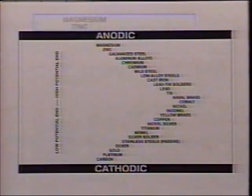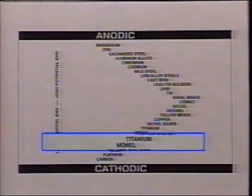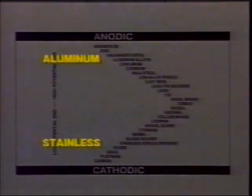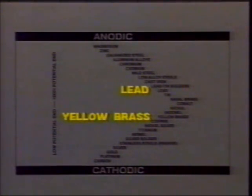At the top of the chart are the metals which most easily corrode, such as magnesium and zinc. At the bottom are the metals which are least likely to corrode, such as gold and platinum. Aluminum appears higher on the chart than stainless steel, which means that the aluminum will act as the anode and the stainless steel fastener as the cathode. In a corrosive environment, there will be rapid corrosion of the aluminum skin where it contacts the stainless fasteners. If two metals are close to each other on the Galvanic chart, corrosion will occur, but not as quickly.